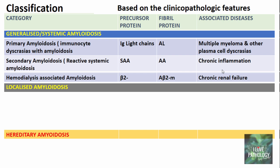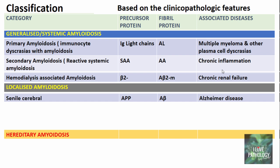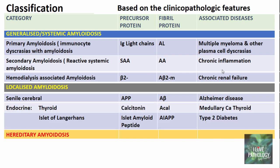In localized amyloidosis, the first type is senile cerebral amyloidosis where the precursor protein is APP and the fibrillar protein is A-beta, associated with Alzheimer's disease. The second is endocrine-type localized amyloidosis, where amyloid deposits occur in endocrine organs like the thyroid or islets of Langerhans. In medullary thyroid carcinomas, calcitonin deposits as A-cal. In type 2 diabetes mellitus, islet amyloid peptide deposits as AIAPP in the islets of Langerhans.